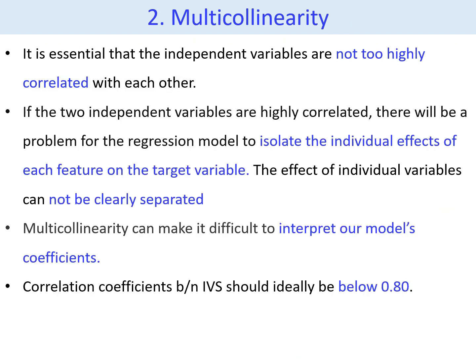Multicollinearity is the second assumption test. The correlation between the dependent variable and the independent variable is expected, because there is a causal relationship between them. However, it is essential that the independent variables are not too highly correlated with each other — that is, the correlation coefficients between them should ideally be below 0.8. If two independent variables are highly correlated, there will be a problem of multicollinearity. In that case, the regression model will struggle to isolate the individual effects of each independent variable on the dependent variable, because there is an overlap between the highly correlated independent variables.